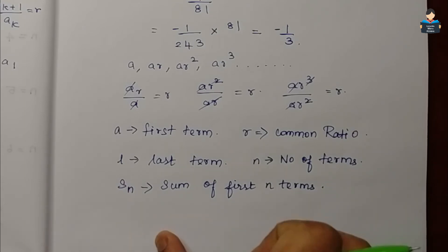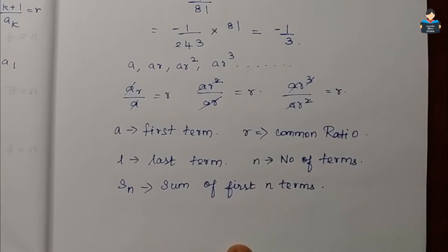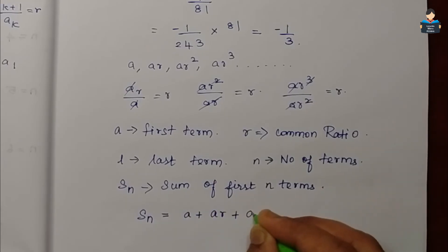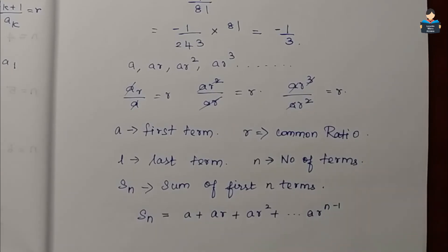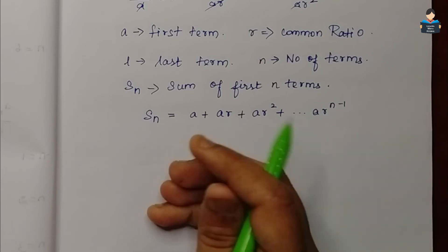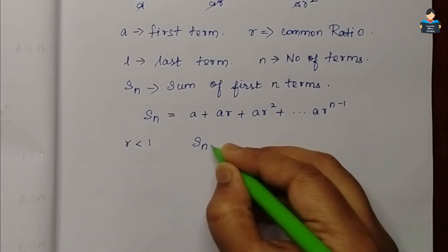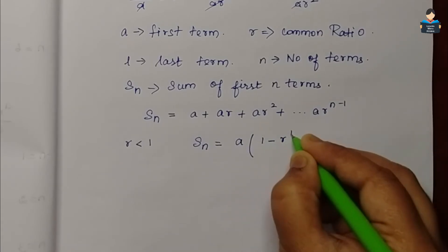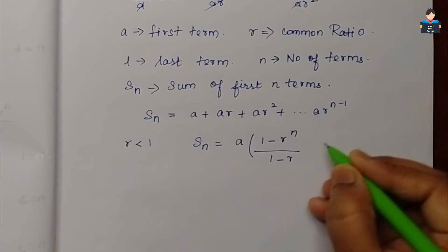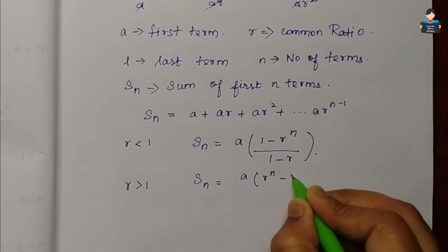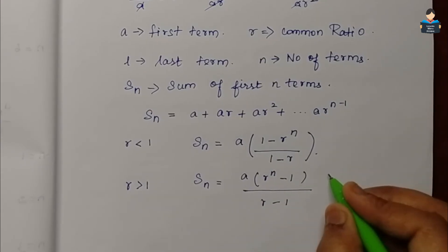Next is the sum of the first n terms. Unlike the AP sum formula, the GP sum formula is: Sn equals A plus AR plus AR squared plus AR to the power n minus 1. This gives us the sum formula Sn equals A(r^n - 1) divided by (r - 1), for r values greater than 1.